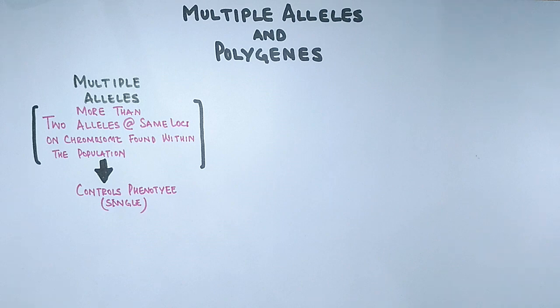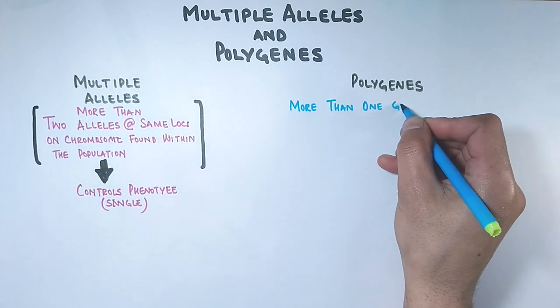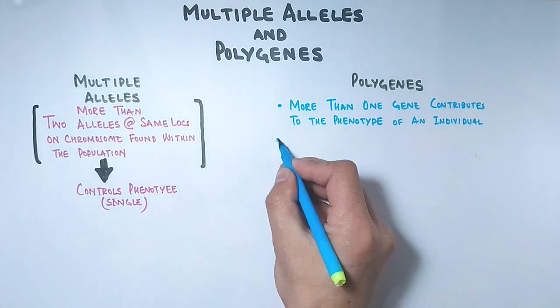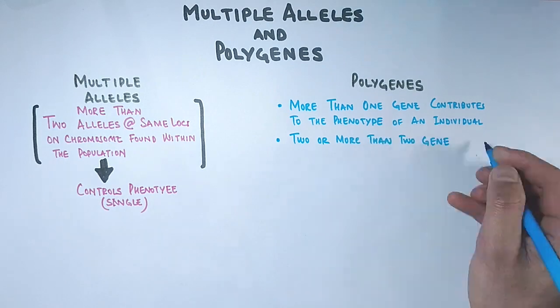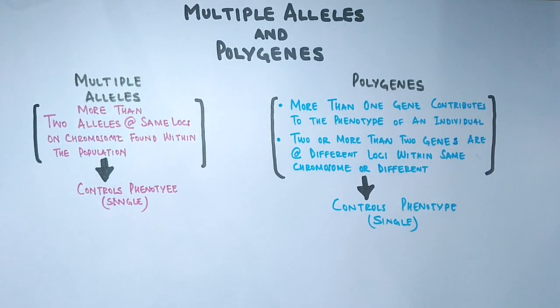So this is what multiple alleles are. And on the other hand, we have polygenes. We see the polygenes are the genes where more than one gene contributes to the phenotype of an individual. Here, two or more than two genes at different loci give an additive effect for a single phenotype within an organism.